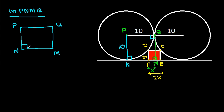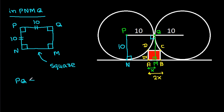In quadrilateral pnmq, this angle is 90 degrees, this angle is 90 degrees, and this angle is 90 degrees, so this angle will also be 90 degrees. And pq equals pn equals 10, that means it will be a square. So pq equals nm equals 10, and nm is 10.